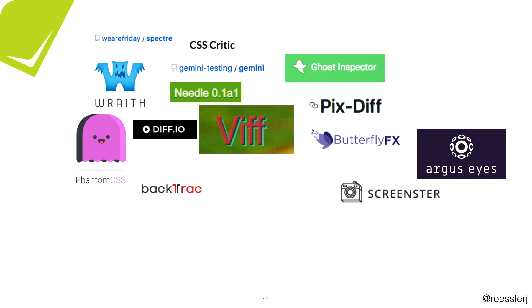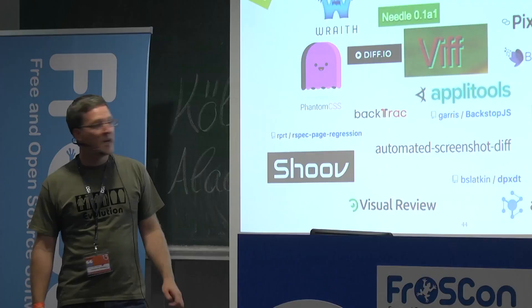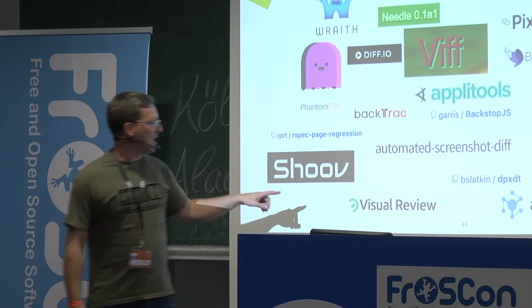What can we do about that? You can do a pixel diff — that's the easiest solution. It's easy to implement, easy to roll out, and works for almost any user interface technology. Because of that there are a whole bunch of tools available.